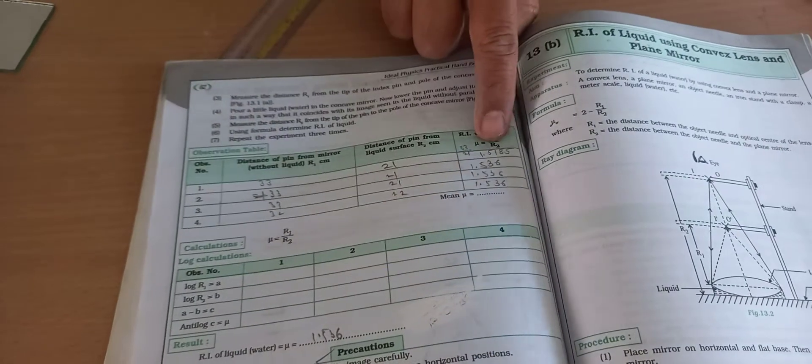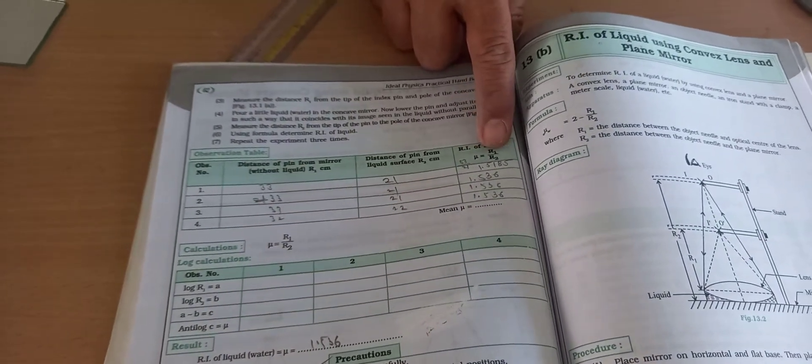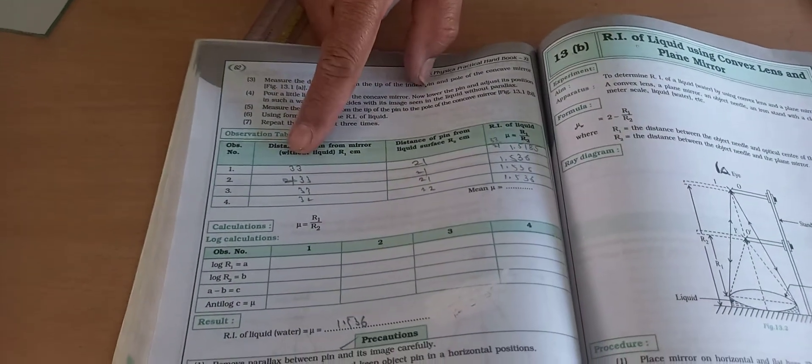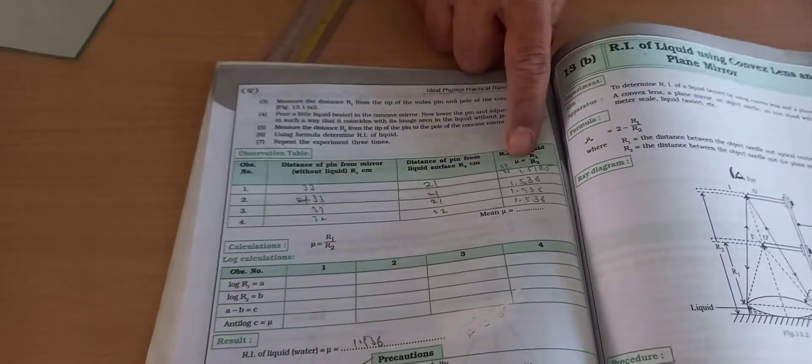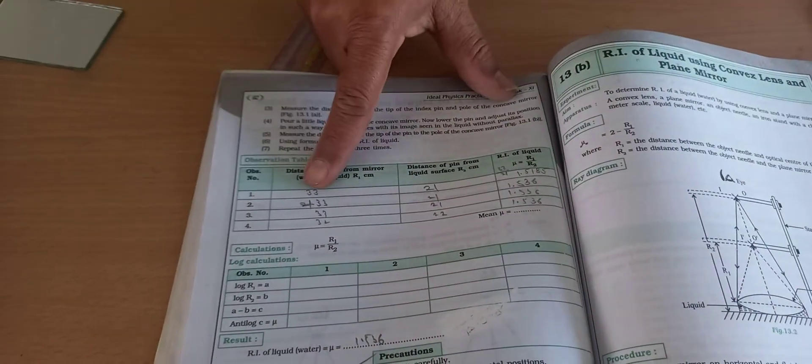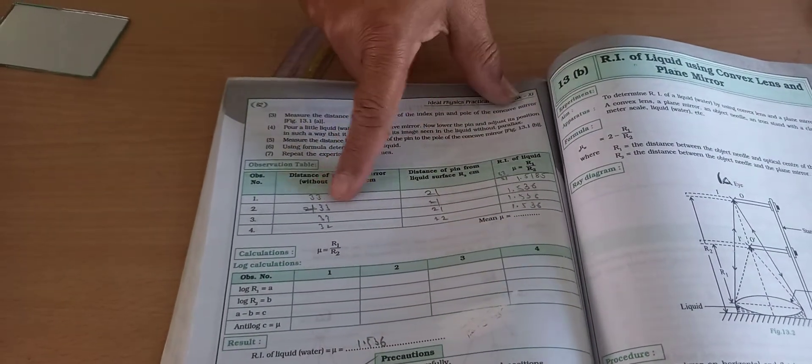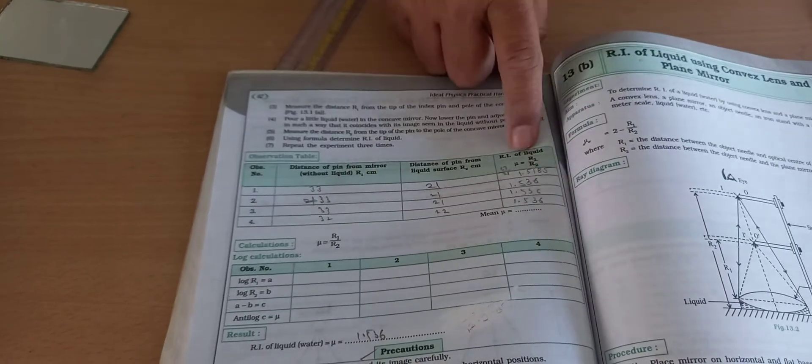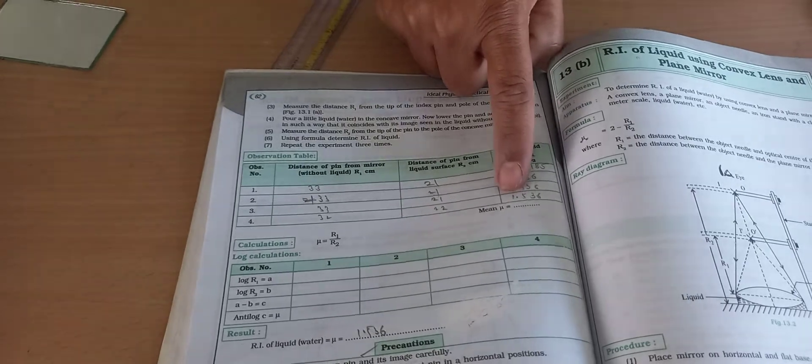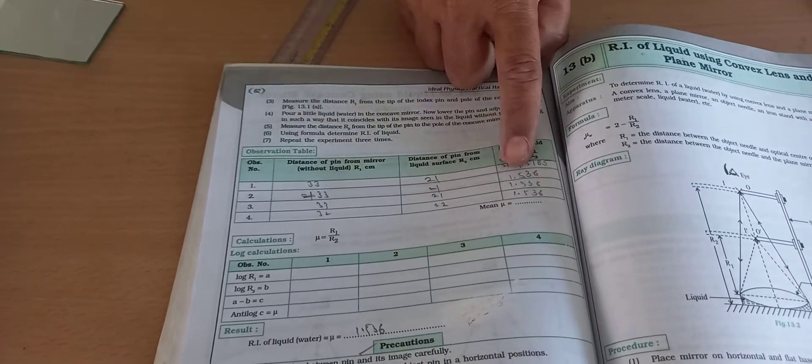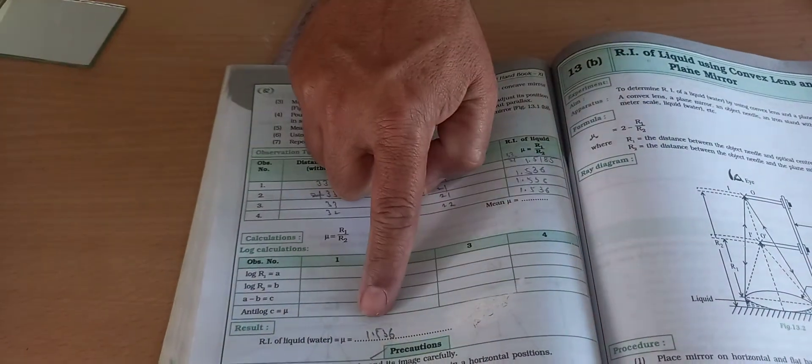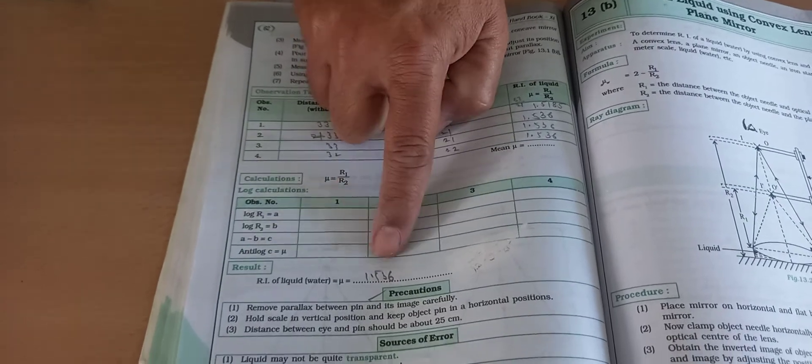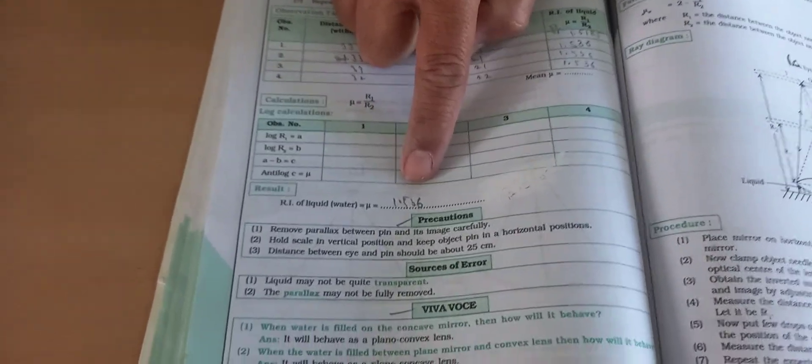Repeat three more times: 21, 21, 22. Now find the ratio r1/r2. So 33/21 = 1.518. Similarly, calculate for the second, third, and fourth readings. Then find the mean: add all four values and divide by 4. We got 1.536. This is the refractive index of the liquid using concave mirror. In this case, the liquid is water.